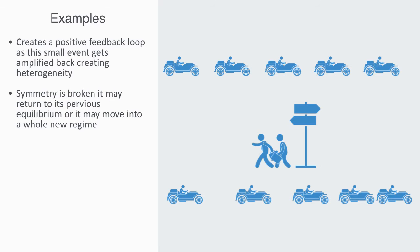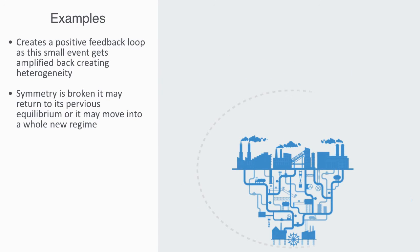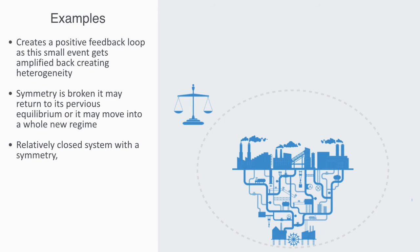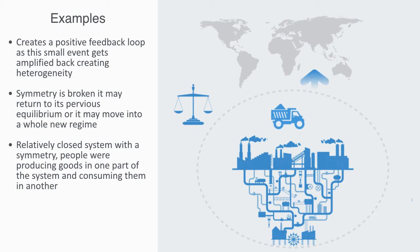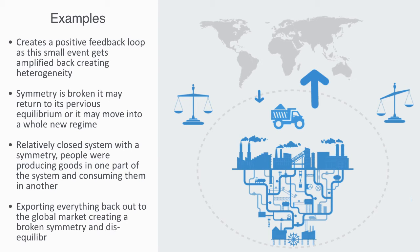As an example of symmetry breaking within economics, we might think about the emergence of globalization. On a very high level, the industrial age system of the national economy, because it was a relatively closed system, had a symmetry to it — people were producing goods in one part of the system and consuming them in another. With globalization, we get symmetry breaking of the national economy as components emerge that connect directly into the global economy. A multinational corporation comes in and builds a mine, exporting everything back out to the global market, creating a broken symmetry and disequilibrium.